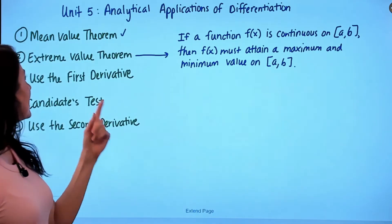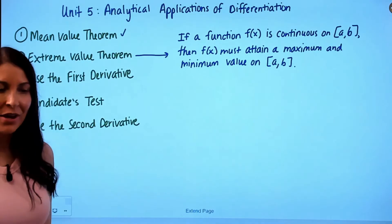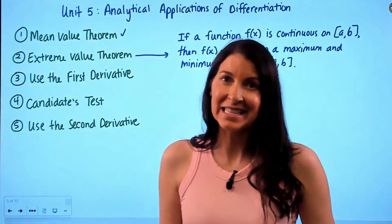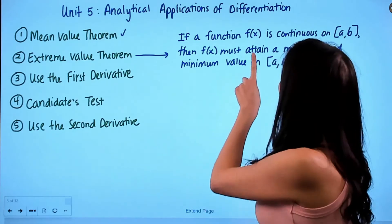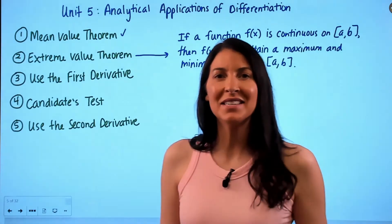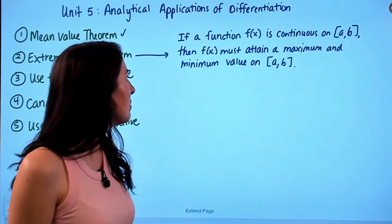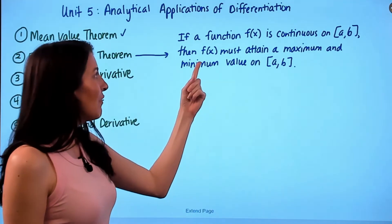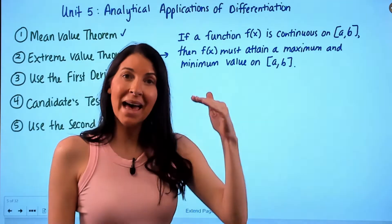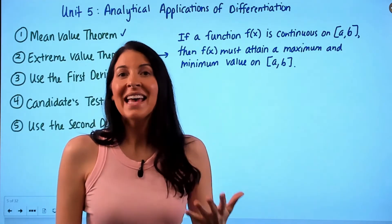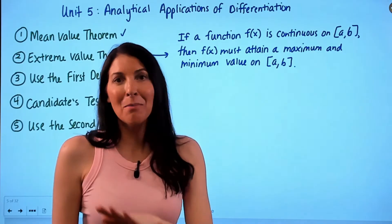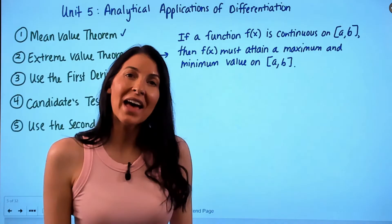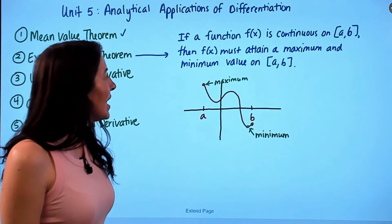Next is the second existence theorem: the Extreme Value Theorem. For the Extreme Value Theorem, one condition must be met — f(x) must be continuous on the given closed interval [a, b]. As long as that condition is met, f(x) must attain a maximum and a minimum on that interval. All that has to be true is that the function is continuous.